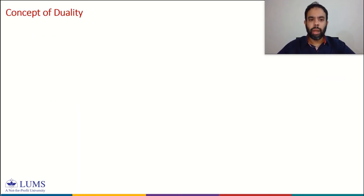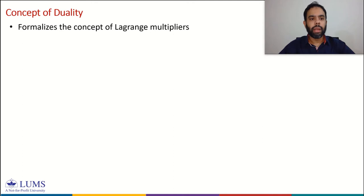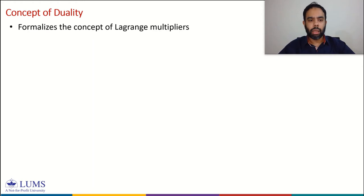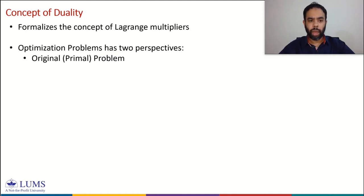Duality theory or duality principle refers to a way to find a bound to the solution of an optimization problem by looking at another optimization problem, which we call a dual problem. The solution of the dual problem provides us a bound to the solution of the original problem. This concept formalizes Lagrange multipliers, and each optimization problem has two perspectives: the primal problem and a dual problem related to it.